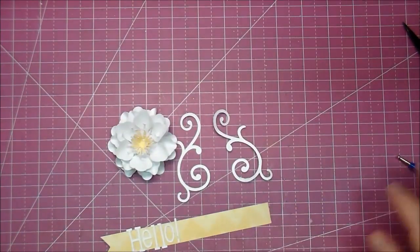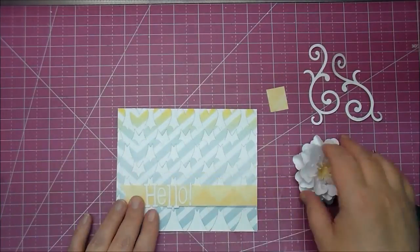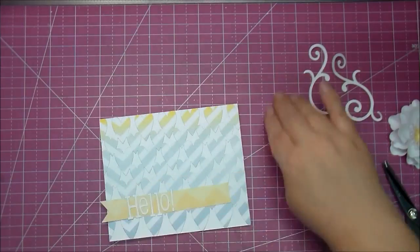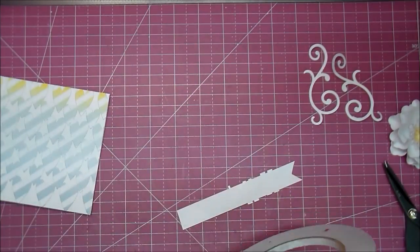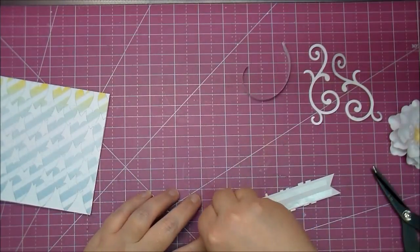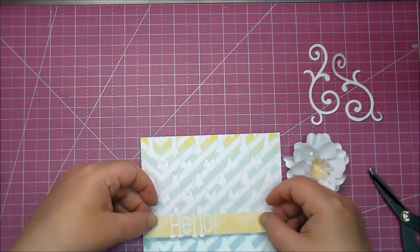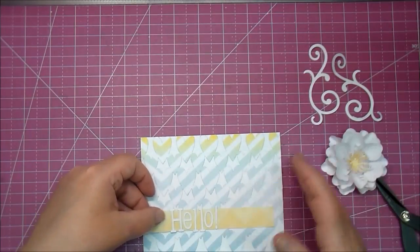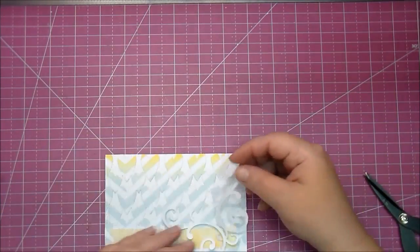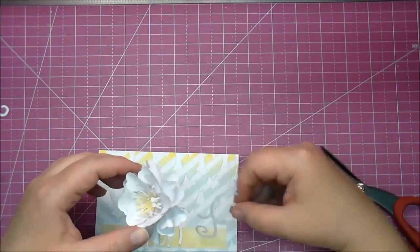Here are some flourishes that I cut out from the Silhouette Cameo. I'm going to use some double-sided adhesive and adhere that down. I will tuck those flourishes behind. They're a little bit long so I'll cut them off and use the extras at the bottom of the card.